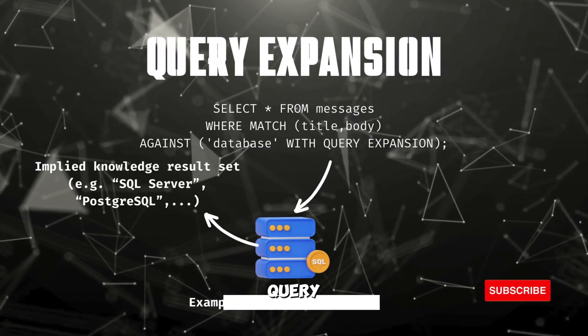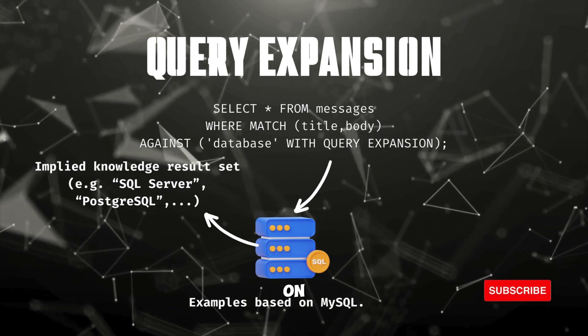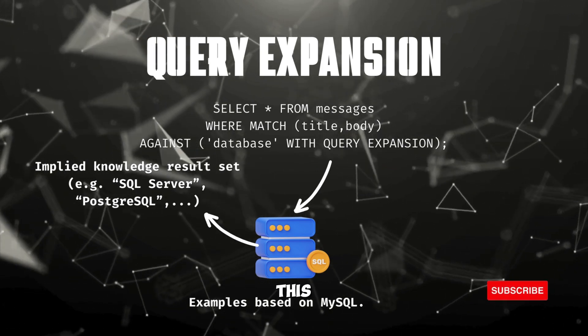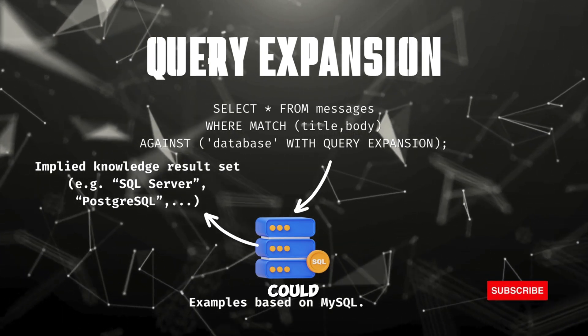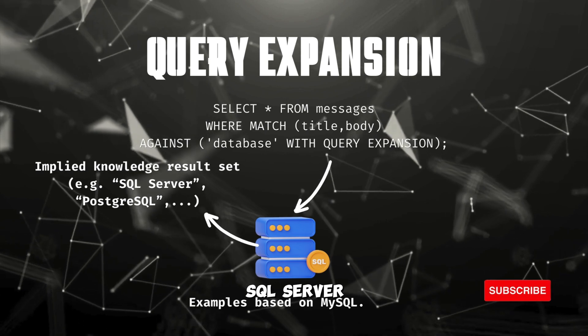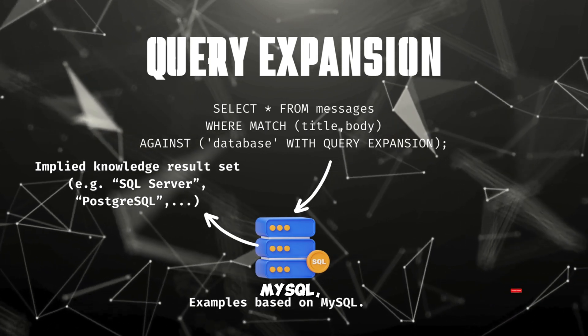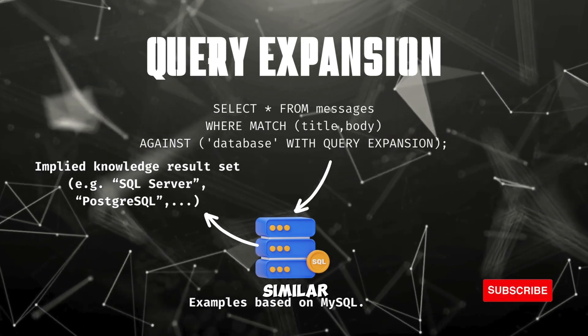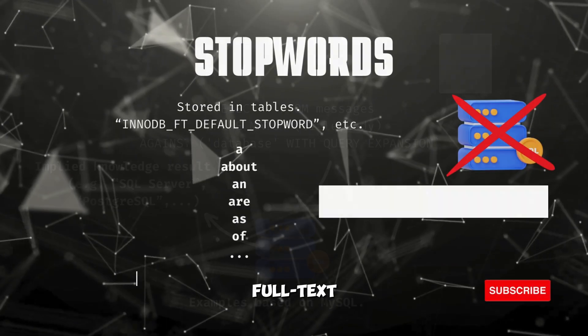Finally, query expansion is useful when we are relying on implied knowledge. In this case, searching for a query of a database could return SQL Server, PostgreSQL, SQLite, MySQL, or other similar results — in other words, results with implied knowledge.